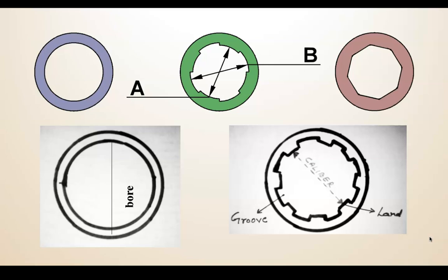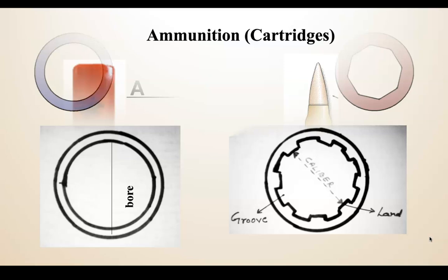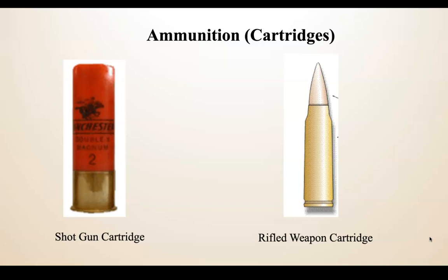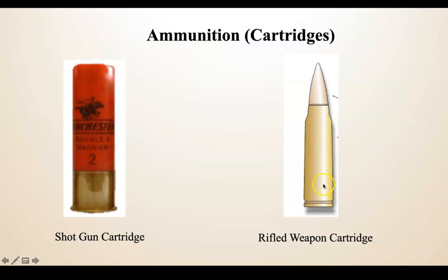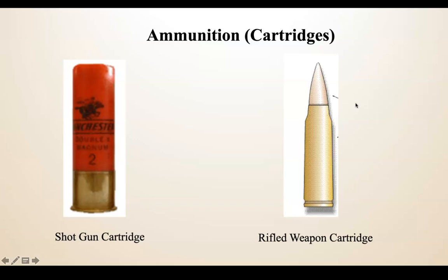There are two types of cartridges: one for smooth bore firearms, which uses multiple shots and pellets, and one for rifled bore weapons, which uses a single projectile or bullet. Shotgun cartridges can be made of plastic or compressed hardboard paper with a brass base. Rifled bore weapon cartridges are made completely of brass and other alloys, and the bullet is made of lead, brass, nickel, and other materials.